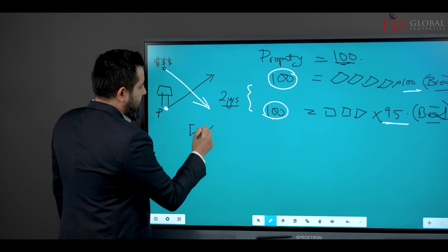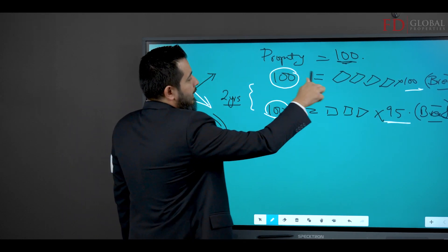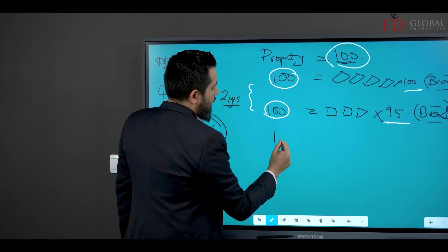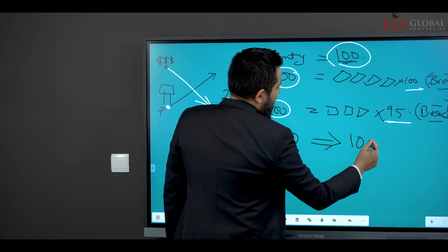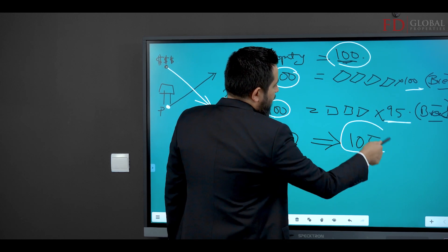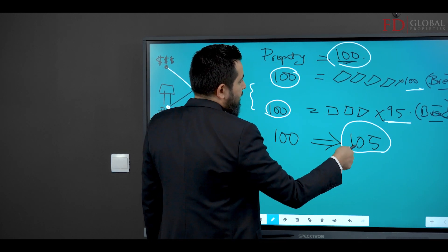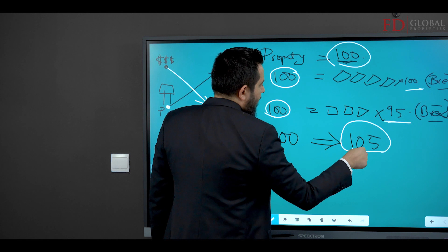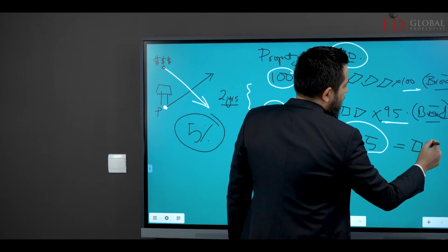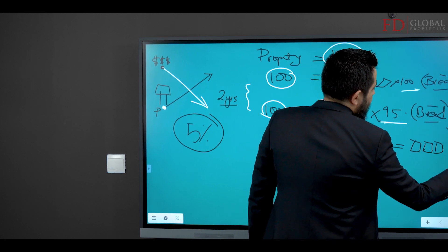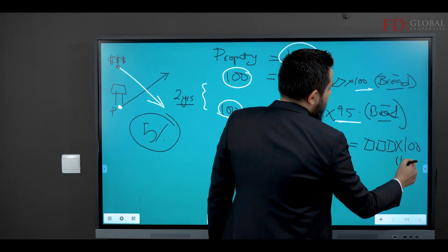Which means if inflation went up by five percent and your property that you bought at a hundred is now 105, guess what? If you sell this property for 105, you would be able to go to the market and get a hundred loaves of bread.